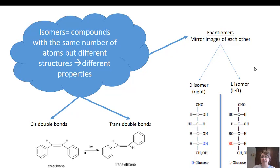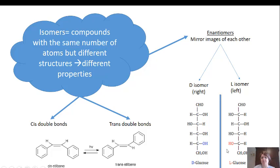Another type of isomer is an enantiomer. These are mirror images of each other, and we frequently see these in biology and biochemistry. The two most common kinds are the D-isomer and the L-isomer — referring to whether something is on the right side or the left side. Here you have glucose in its non-ring form, with the main OH groups on the right side in the D-isomer and on the left side in the L-isomer. You find L-isomers more frequently in nature, but D-isomers exist as well.